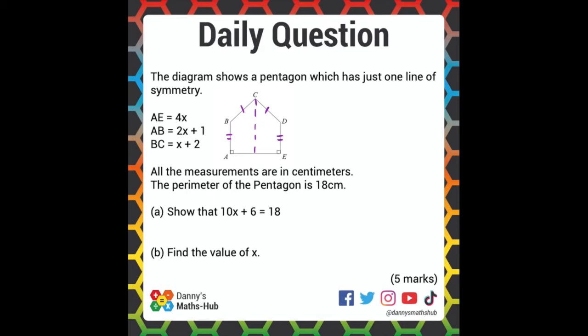Well, now we know that, we can work out the perimeter. So we need to simply do AE, add AB, add BC, add CD, add DE. Because that is the standard perimeter work, is that we add all the sides together.